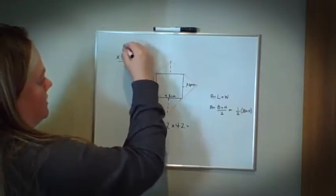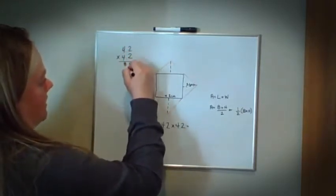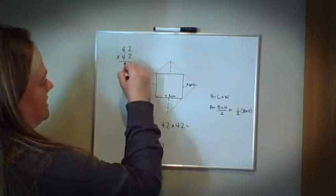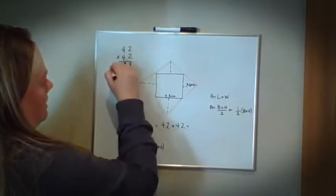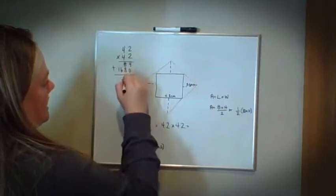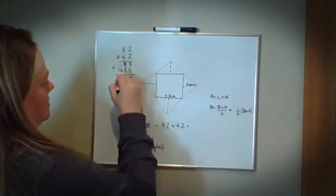2 times 2 is 4. 2 times 4 is 8. Placeholder, 4 times 2 is 8. 4 times 4 is 16. 4 plus 0 is 4. 8 plus 8 is 16. 6 plus 1 is 7. 1 plus 0 is 1.